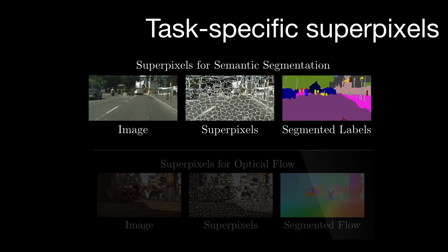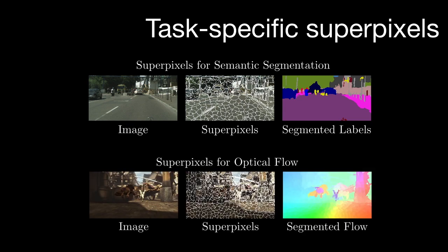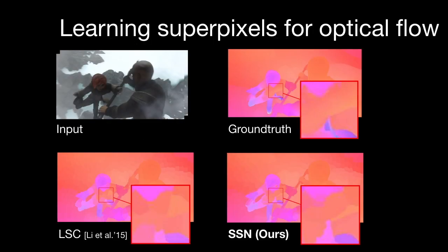The flexibility of SSNs allows one to learn task-specific superpixels. For instance, we can use SSNs to learn superpixels for semantic segmentation or to efficiently represent optical flow. To demonstrate the applicability of SSN for aggregation tasks, we conduct a proof-of-concept experiment where we learn superpixels that adhere to optical flow boundaries. Results indicate that SSNs superpixels can better represent ground truth optical flow compared to other techniques.